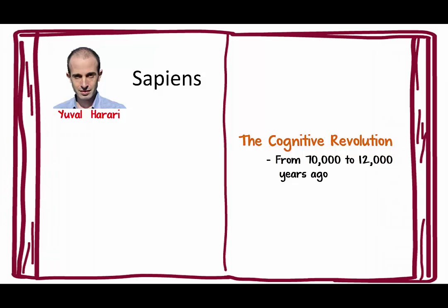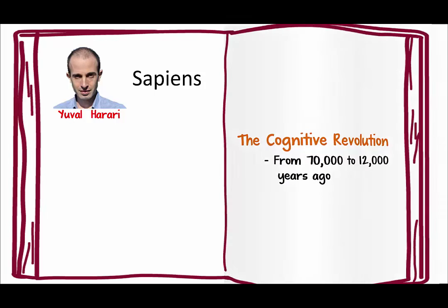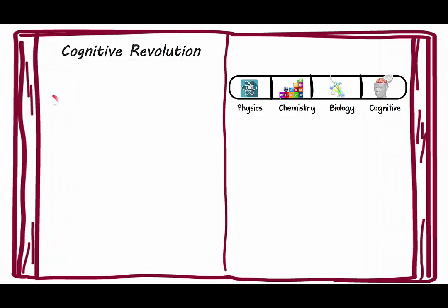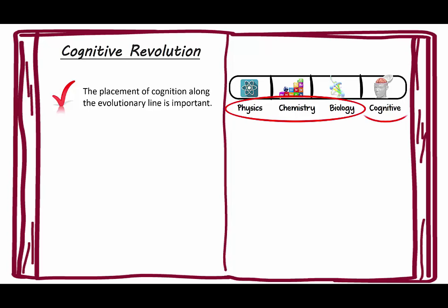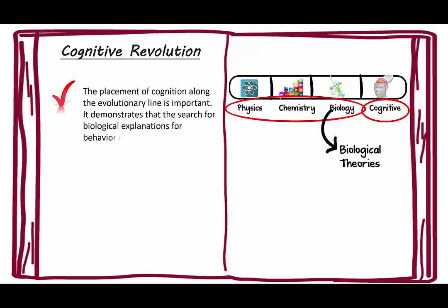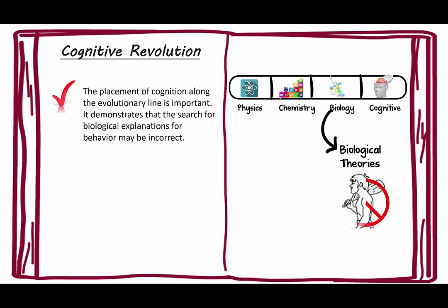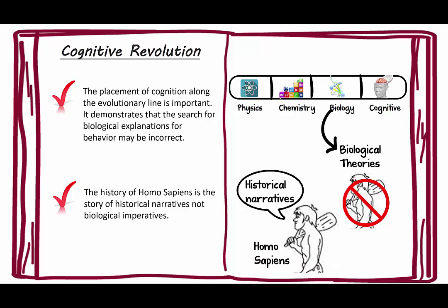What we're going to talk about now is the cognitive revolution, which is from 70,000 to 12,000 years ago. An important issue is the placement of cognition along the evolutionary line. It demonstrates that the search for biological explanations for behavior may be incorrect — just like we don't search for chemical explanations for all biological behavior, there's no reason to use biological theories to define all cognitive behavior. The history of Homo sapiens is the story of historical narratives, not biological imperatives. This is very important because it doesn't put man as a subset of biology.